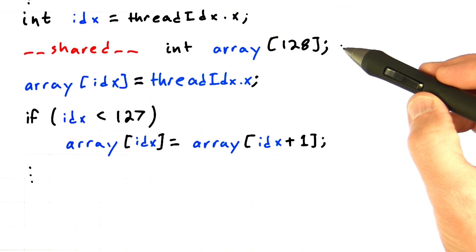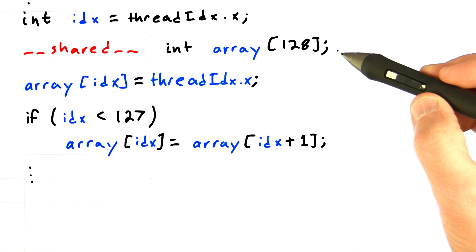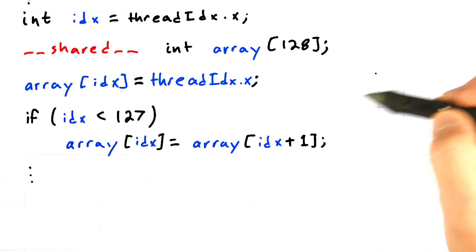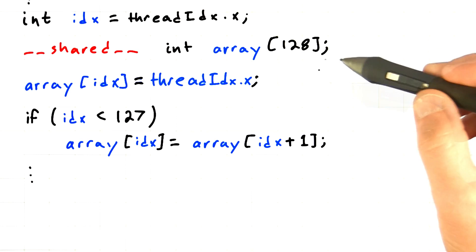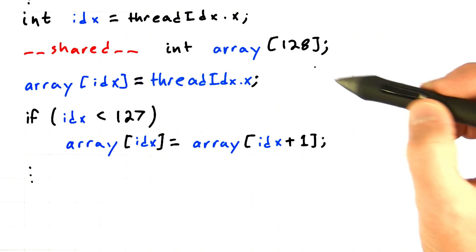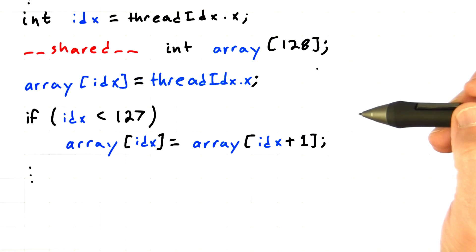Then in this line we're declaring a shared variable, which is going to be shared by all the threads in the thread block. I just hard-coded in 128 elements here.